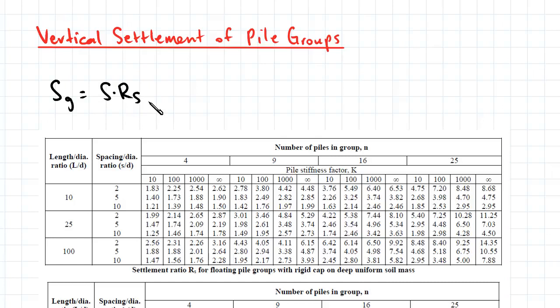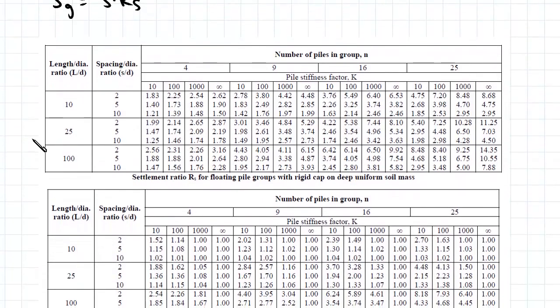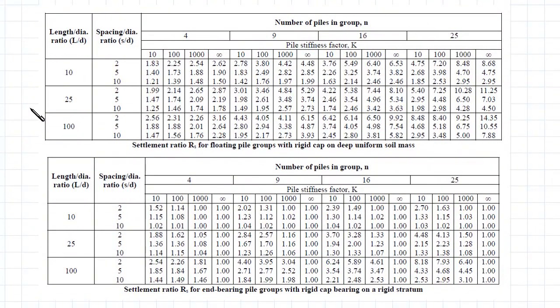The top table is used for floating pile groups and the bottom table is used for end bearing pile groups. First, you determine the number of piles in the group and then the pile stiffness factor K. You need to then determine the length to diameter ratio and the spacing to diameter ratio, and then you can get a value for RS.